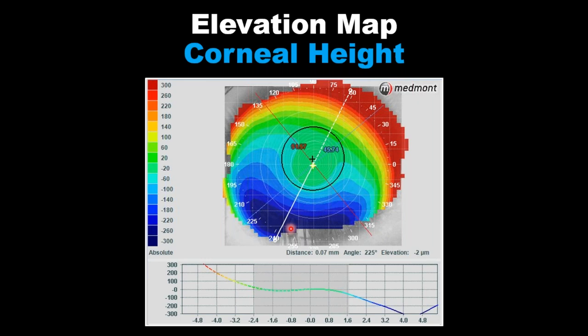El área roja es el área más alta con respecto a una referencia; el área azul es la más baja. Estamos hablando ahora de altura, no de poder ni de curvatura — altura con respecto a la referencia. El área roja es la más alta de esa córnea; el área azul la más baja. Si usted pone un lente de contacto gas permeable, puede esperar que en el área roja va a ser donde toque el lente y en el área azul habrá un acúmulo de lágrimas.